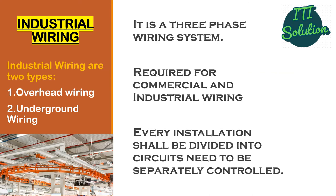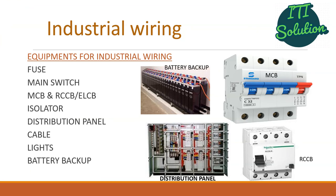Now we discuss about industrial wiring. It is a three-phase wiring system required for commercial and industrial use. Every installation shall be divided into circuits that need to be separately controlled. Industrial wiring is of two types: overhead system wiring and underground system wiring. Equipment used for industrial wiring includes fuse, main switch, MCB, RCCB, ELCB, isolator, distribution panel, cable, lights, battery backup, etc.